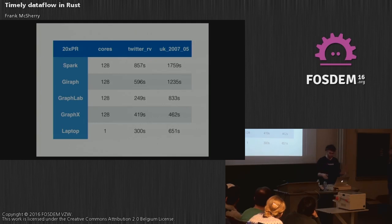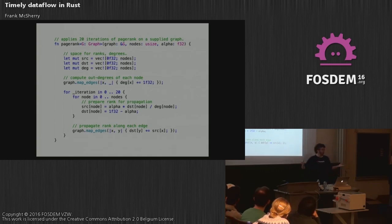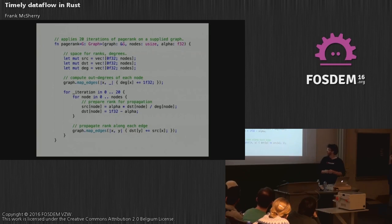You might say we can't all write incredibly awesome single-threaded code. So this is the whole program that did that — and this is Rust, by the way. Rust is delightful. There's nothing particularly magical about it. We allocate some memory to play around with ranks and degrees of nodes, get the out-degrees of some vertices, and then 20 times we loop through all the nodes, update the ranks, loop through all the edges, and increment some weights across edges. That's the whole program — a for-loop executed 20 times.